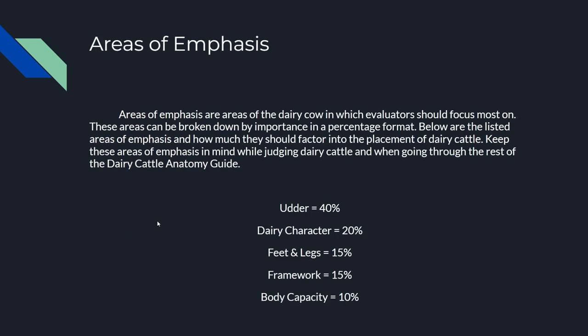To get started, we need a frame of reference in order to truly determine how important these anatomical pieces of the dairy cow truly are. If we don't have a frame of reference, we're essentially going in blind — we have knowledge but it's going to be harder to apply it. Areas of emphasis are areas of the dairy cow in which evaluators should focus the most on, broken down by importance in a percentage format.